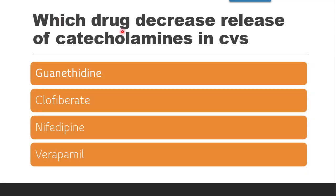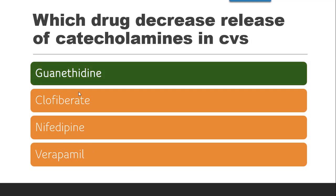The next question is: which drug decreases the release of catecholamines in the cardiovascular system? The options are guanethidine, clofibrate, nifedipine, or verapamil. The correct answer is guanethidine.